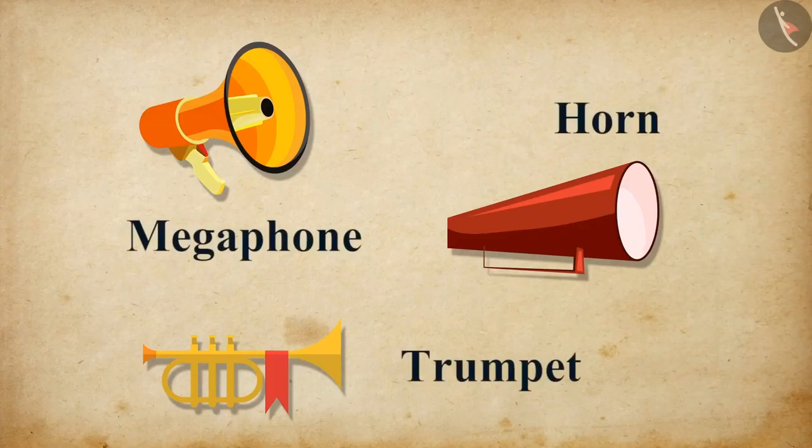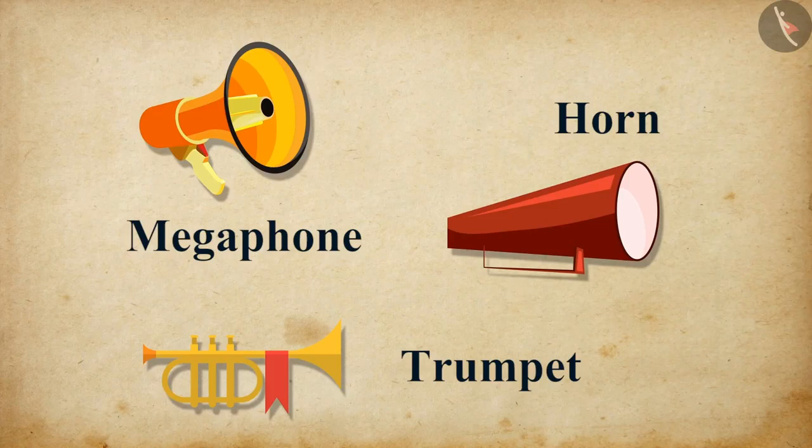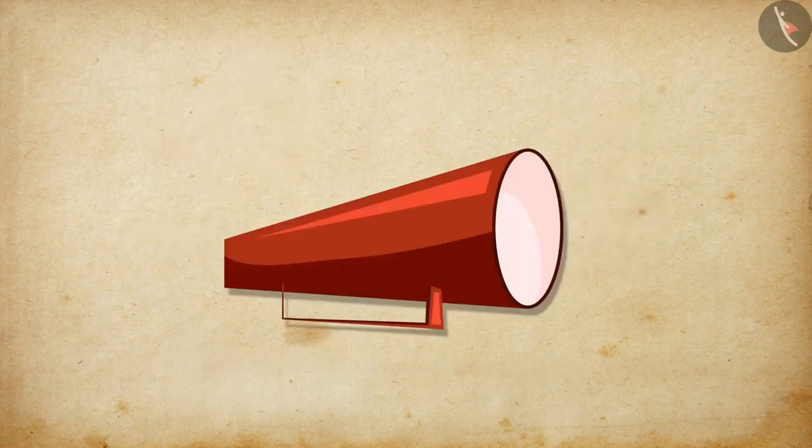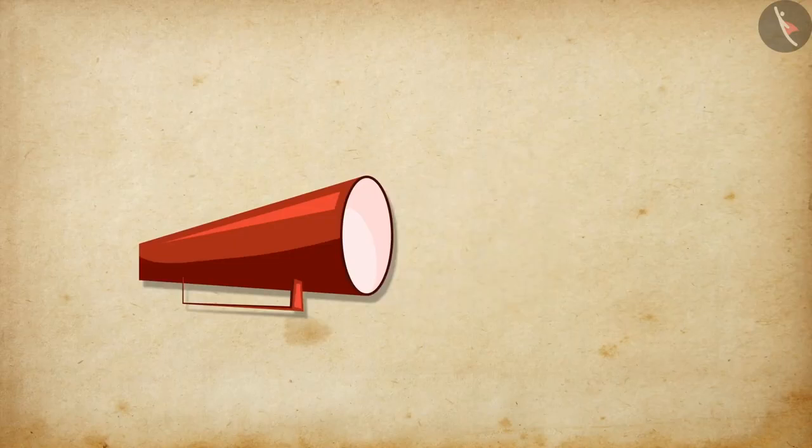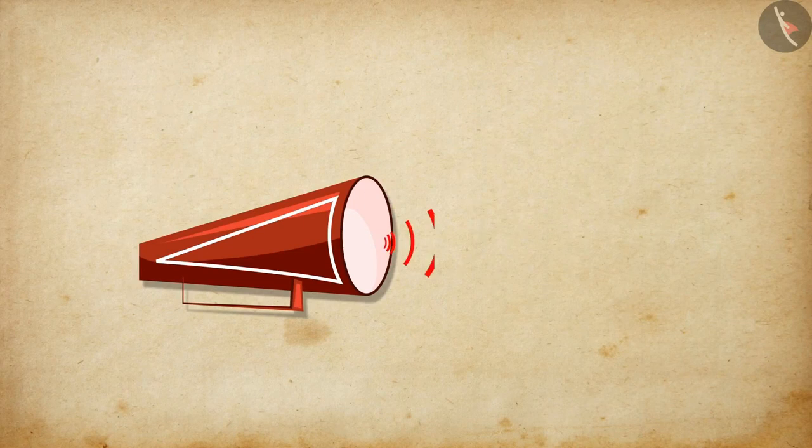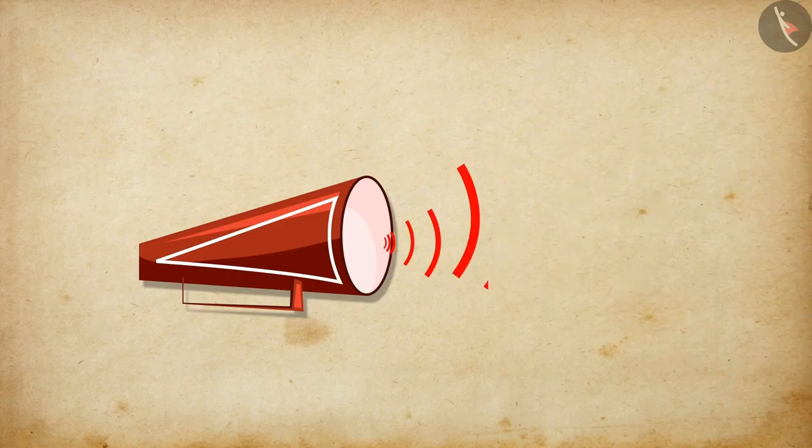We learned about multiple reflections. Now, let us see they are helpful in what ways. Megaphones, horns and musical instruments such as trumpets use multiple reflections. They are designed to sense sound in a particular direction without spreading it in all directions. These instruments have a tube followed by a conical opening, which reflects sound successively. It guides the sound waves from the source in the forward direction towards the audience.